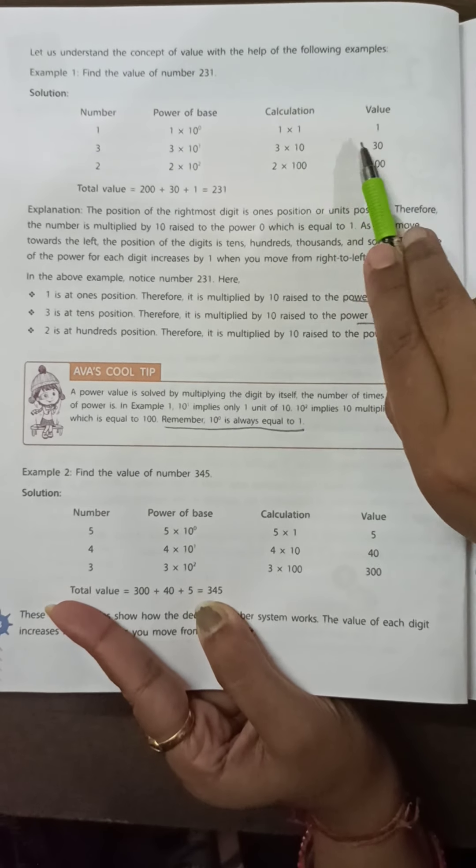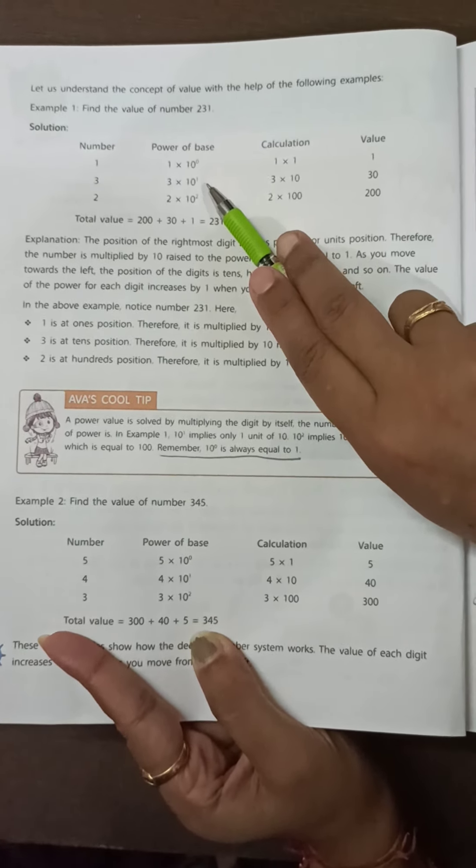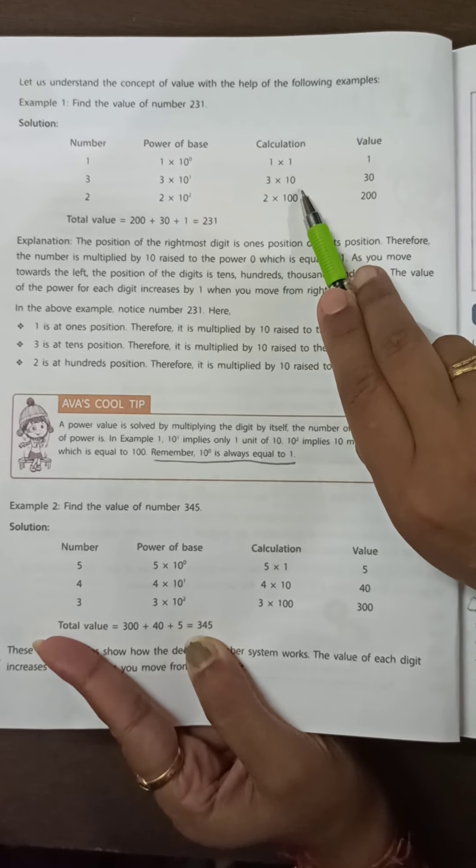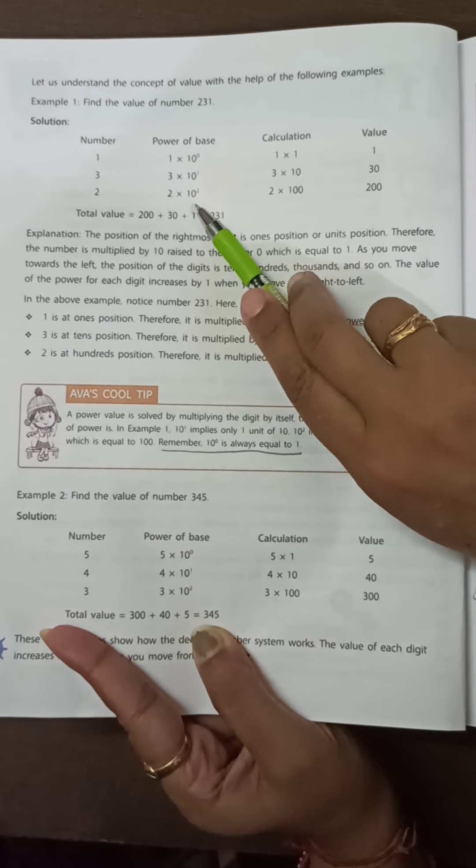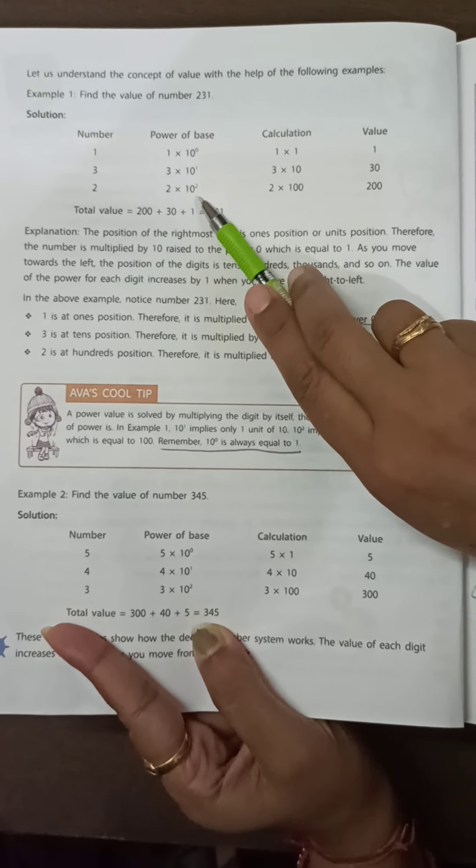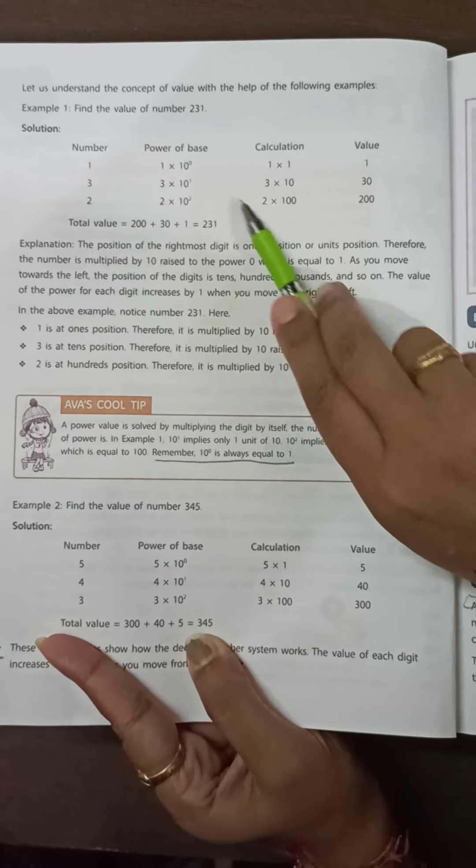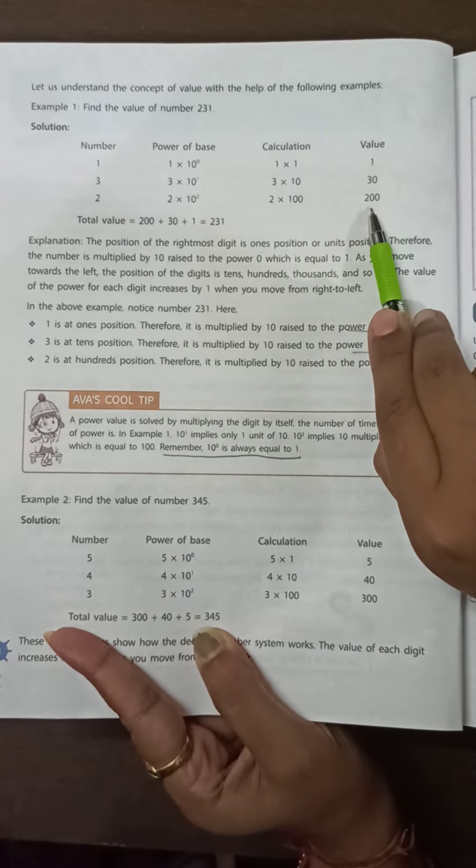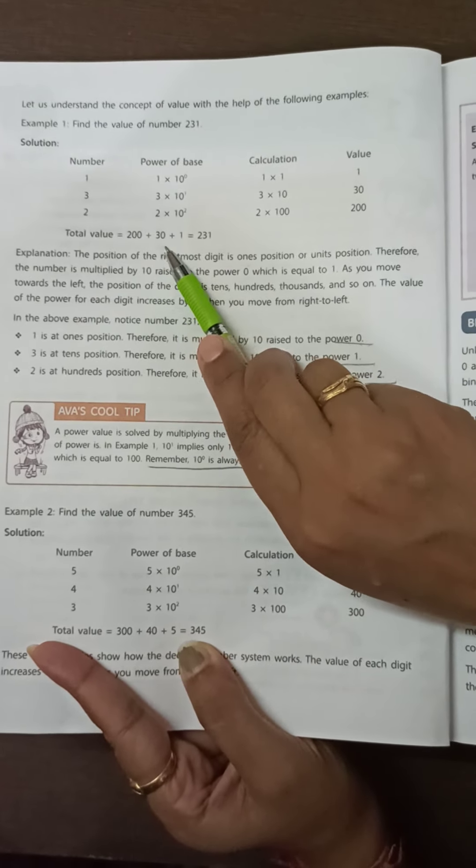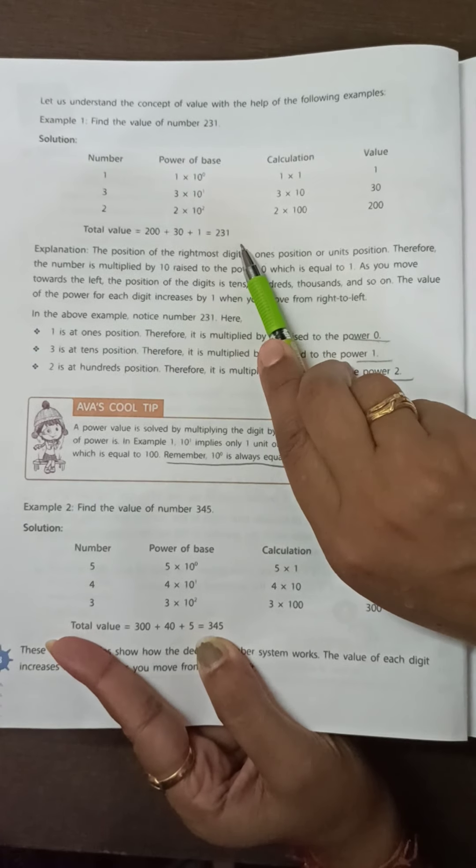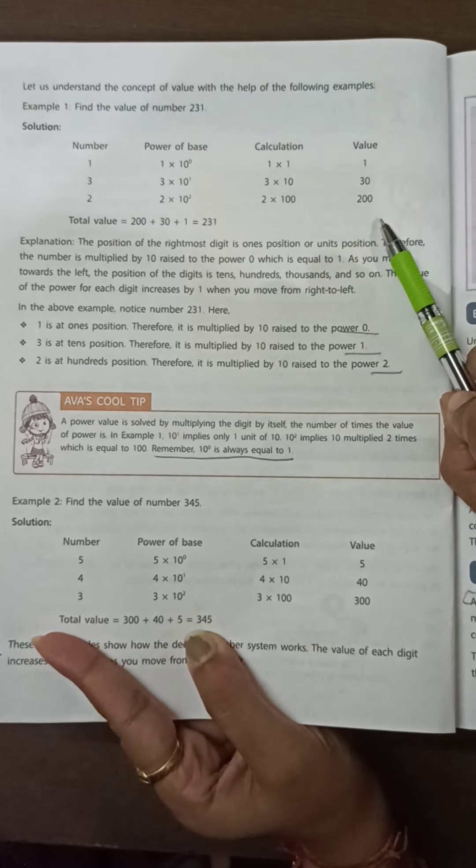1 multiplied by 1 equals 1. 3 multiplied by 10 to the power 1, which is 10, so 3 multiplied by 10 equals 30. 10 to the power 2 means 10 multiplied by 10, which is 100, so 2 multiplied by 100 equals 200. So the total value is 200 plus 30 plus 1 equals 231. In that way, we find the decimal number system value.